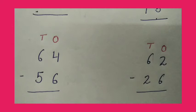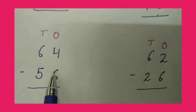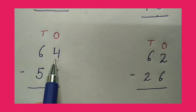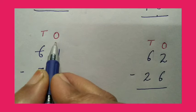In the next sum, we have to subtract 56 from 64. In the 1's column, 4 is a small number. We will borrow 1 ten from 6. So we will write here 14, because we have 1 ten added. So how much? 14.